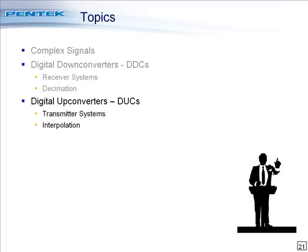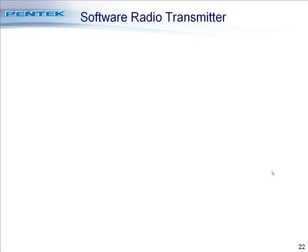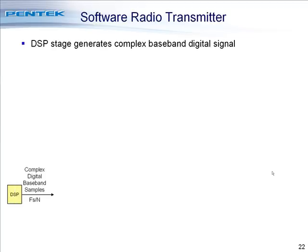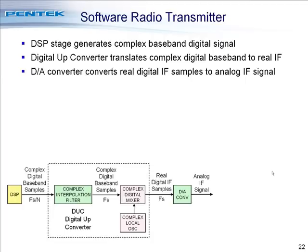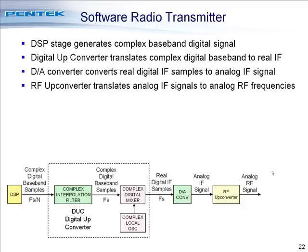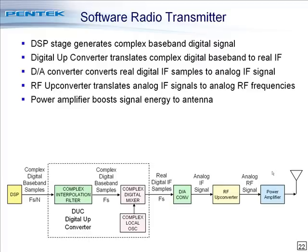Now let's take a look at digital up converters, which are exactly the inverse signal processing scheme to digital down converters. In a typical software radio transmitter, we start with complex digital baseband samples at a low sampling rate of FS over N. A digital up converter translates these to real IF samples, which are fed into a D-to-A converter producing an analog IF signal. An RF up converter then translates the analog IF signal to the analog RF or antenna frequencies, and typically a power amplifier boosts the signal energy for transmission from the antenna.